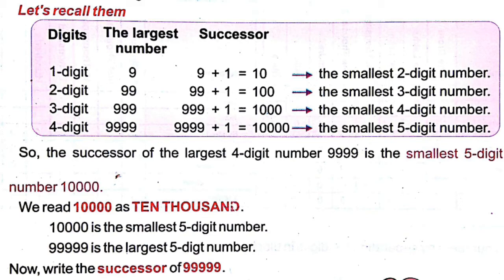9999 is the four-digit largest number. The successor is 9999 plus 1, which is 10,000. So 10,000 is the smallest five-digit number.